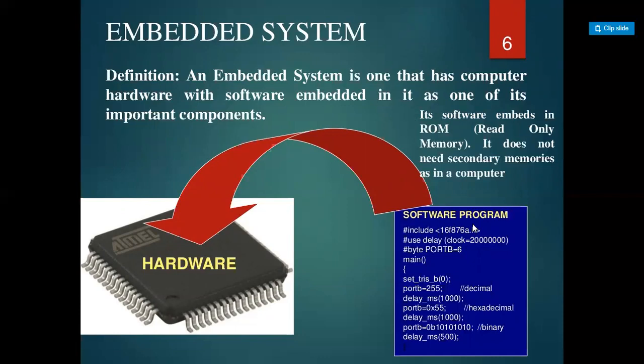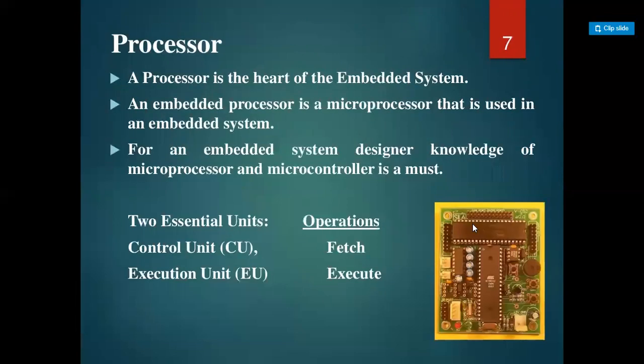For example, consider a washing machine. We define washing time, spin time, rinse time, and drain. We program all of that, store it in an IC, and place it inside the washing machine, making it an automatic washing machine. That is how embedded programming works.